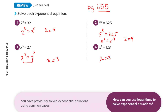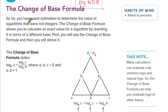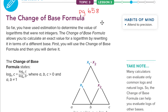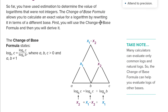Now we're going to learn the change of base formula, which honestly is becoming a little bit obsolete. We're on page 658. This is becoming obsolete because we have calculators that will do a lot of this math for us. But there was a time when we didn't. Here's the change of base formula: log base b of c is equal to log base a of c over log base a of b. Let me show you what that means.